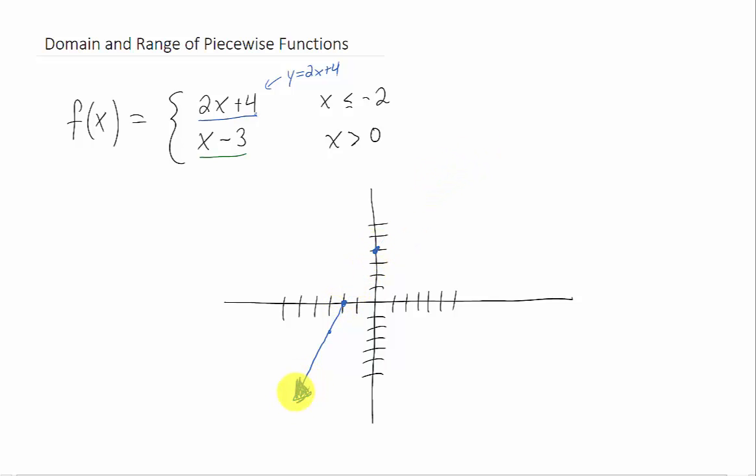Okay, so this is all we're left with for this piece of the function right here. Let's graph the second piece. y equals x minus 3 is another line. It has a y-intercept of negative 3 and it has a slope of positive 1. And if we connect all the dots, our line is going to look something like that.